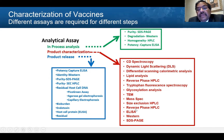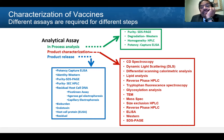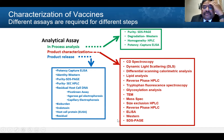Then we do purity by SDS-PAGE, size exclusion, reverse phase, and mass spec. Then we start using biophysical methods for characterization of the vaccine, such as CD spectroscopy, light scattering, differential scanning calorimetry, reverse phase, tryptophan fluorescence, glycosylation, and transmission electron microscopy. Not all these assays need to be performed — we need to decide early on which are critical. For product release, we focus on potency, identity, purity, and residuals including host cell DNA, host cell protein, bioburden, endotoxin, and process residuals. That combines the aspects of vaccine characterization.